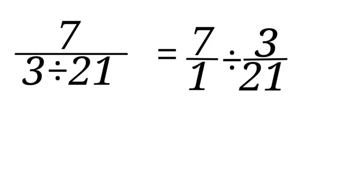So let us solve it. We have 7 over 1 divided by 3 all over 21. Now let's reduce 3 over 21 to a lowest term. We will have 3 divided by 3 is 1. 21 divided by 3 is 7. So we'll have 7 over 1 divided by 1 over 7.